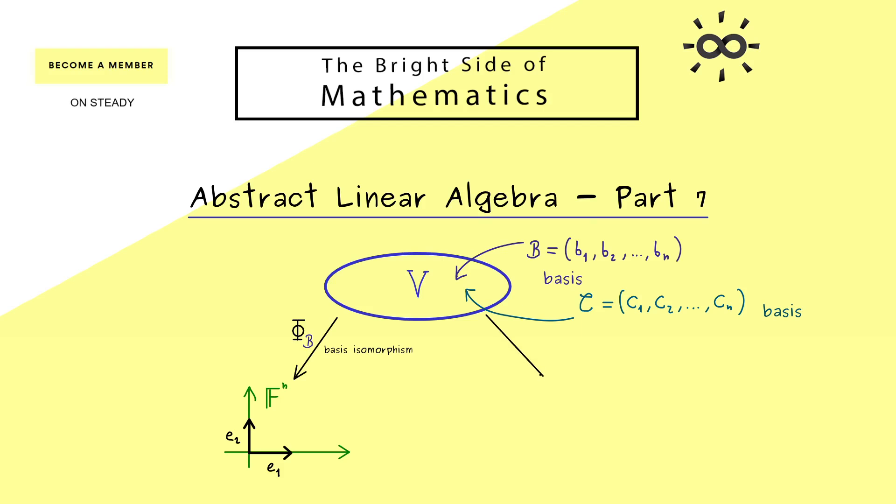We just consider another basis and then we also have another basis isomorphism. Indeed the picture is exactly the same. We also map V to our F^n.